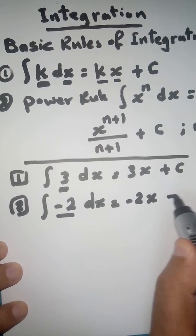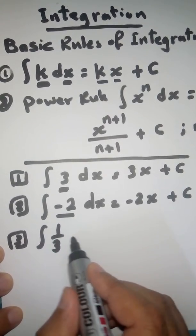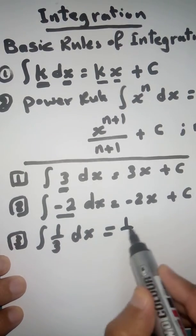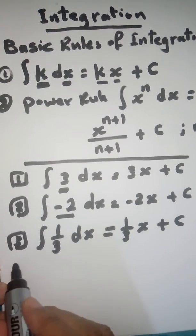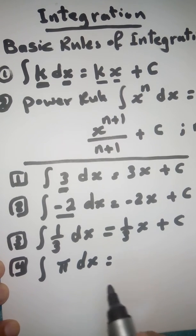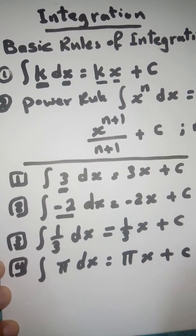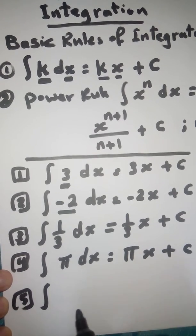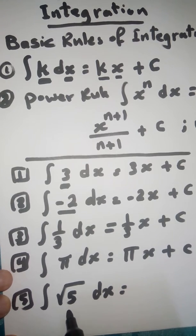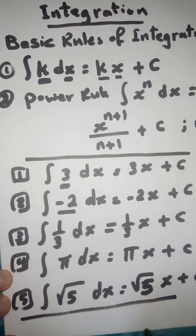That gives negative 2X plus C. Example three: the integral of (1/3) dx. One-third is a constant, so apply the first rule: multiply one-third by X to get (1/3)X plus C. Example four: the integral of π dx. Pi is a constant, so multiply π by X and add C. Example five: the integral of √5 dx. Root 5 is a constant, so multiply it by X to get √5 · X plus C.